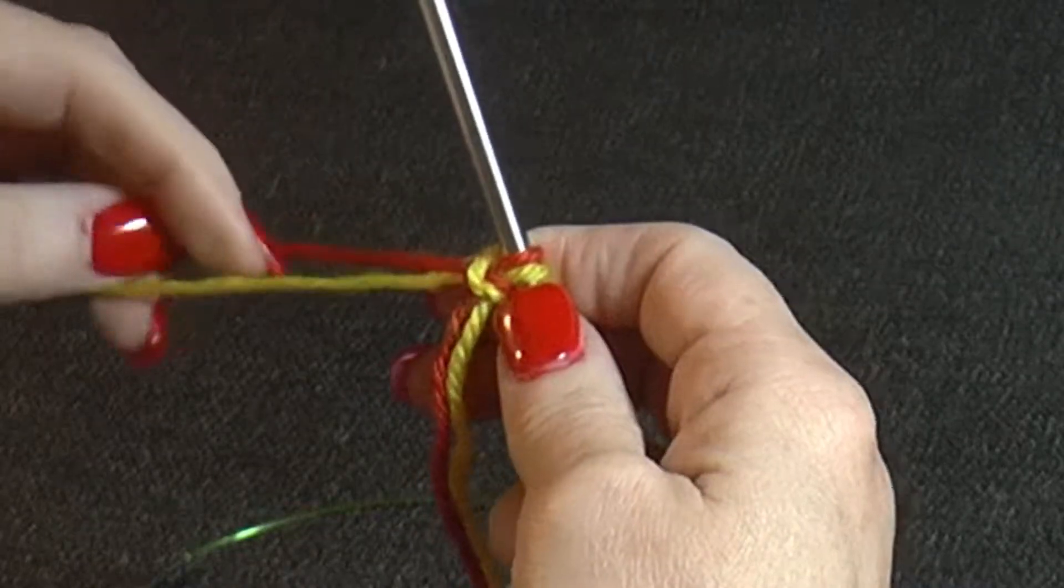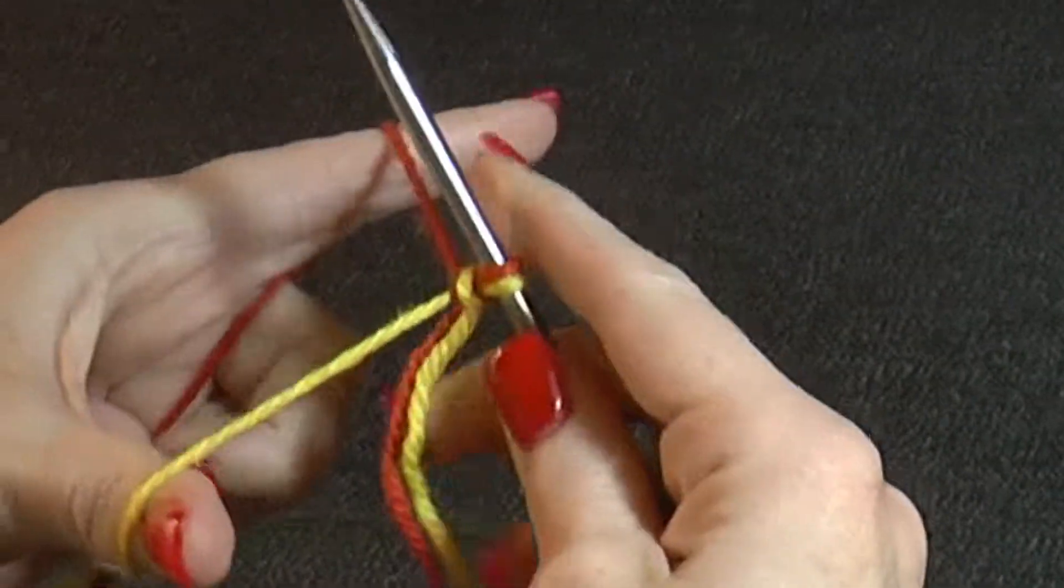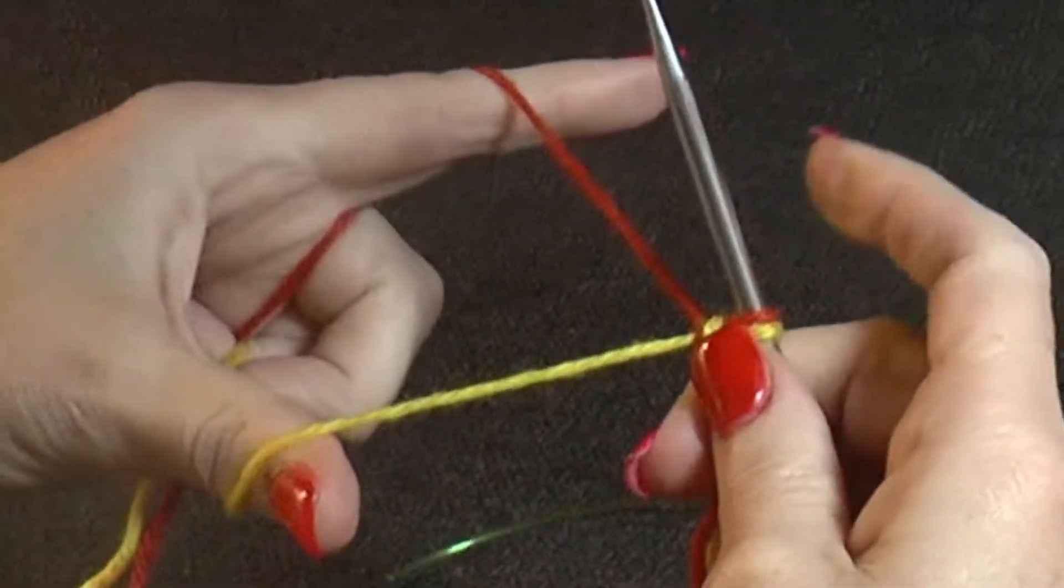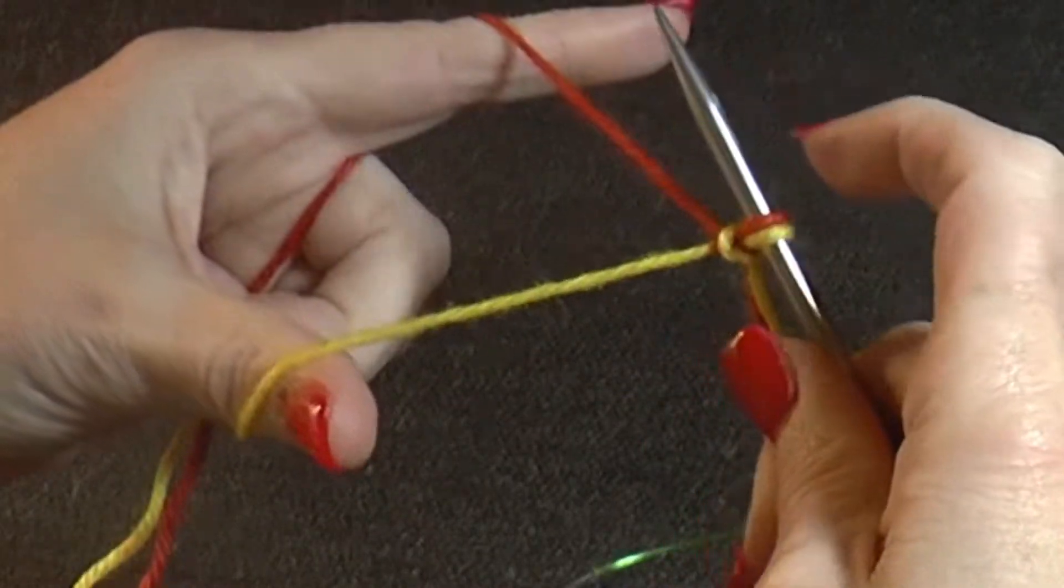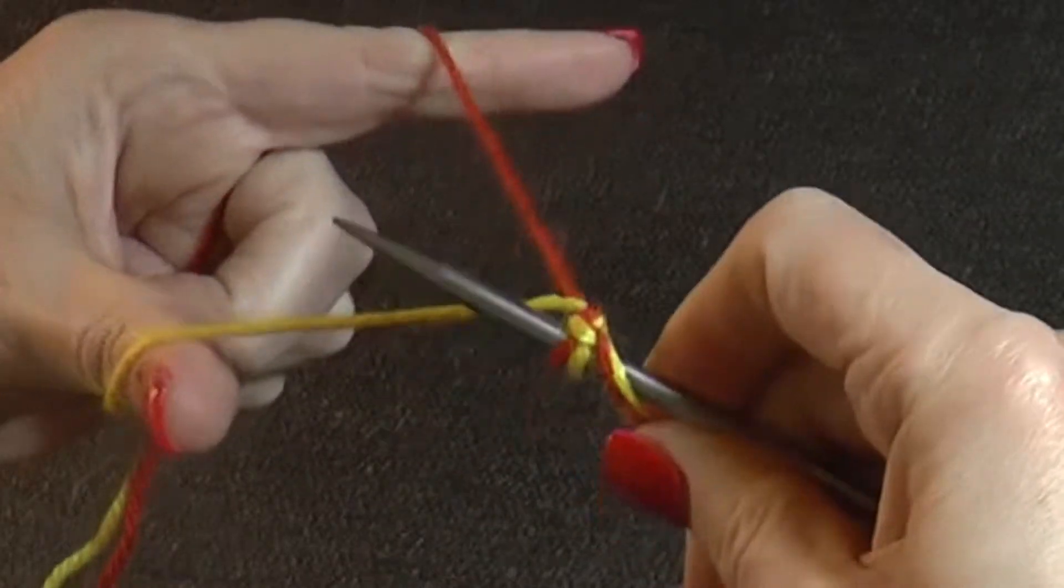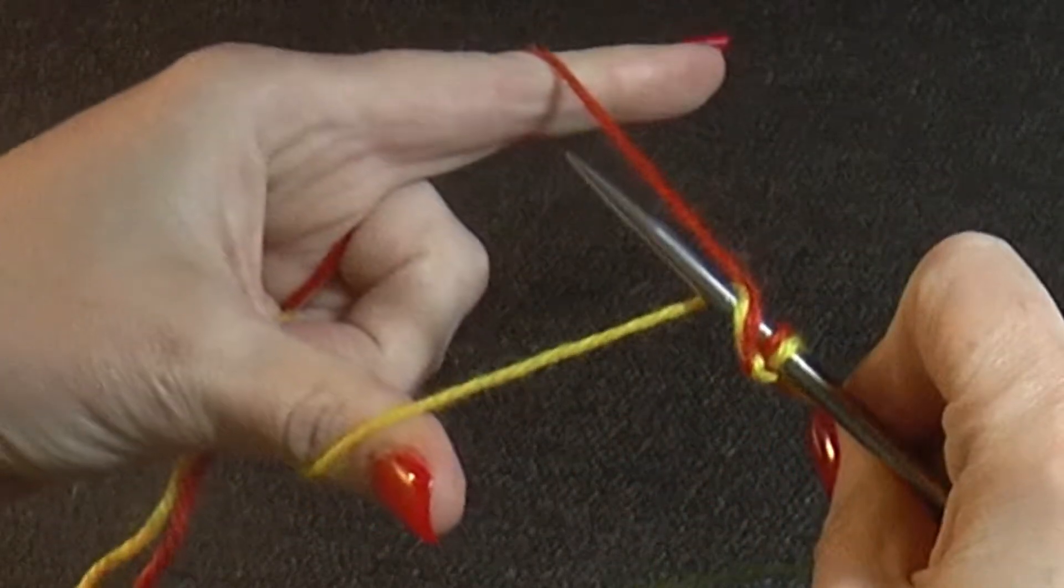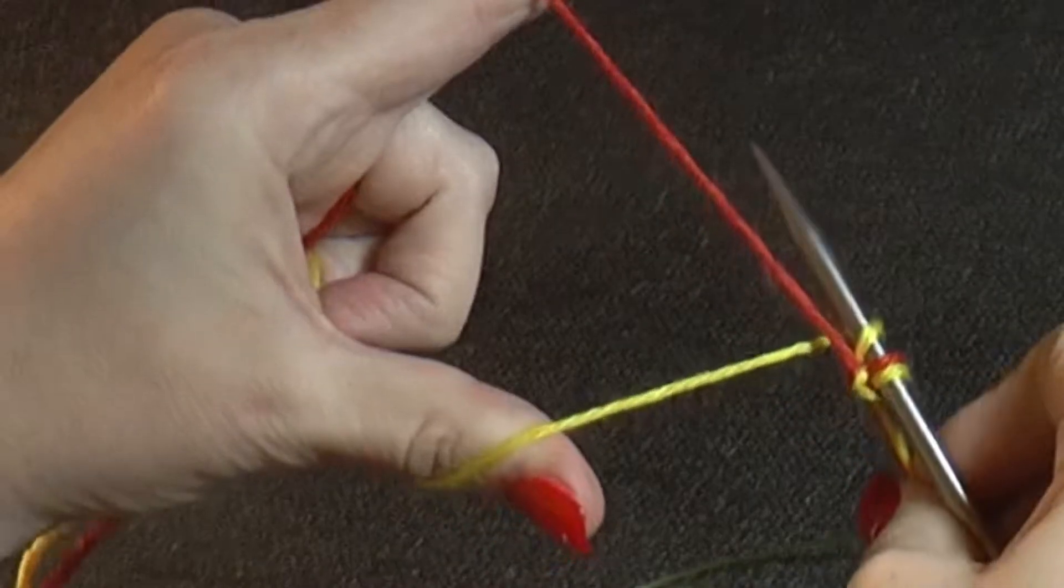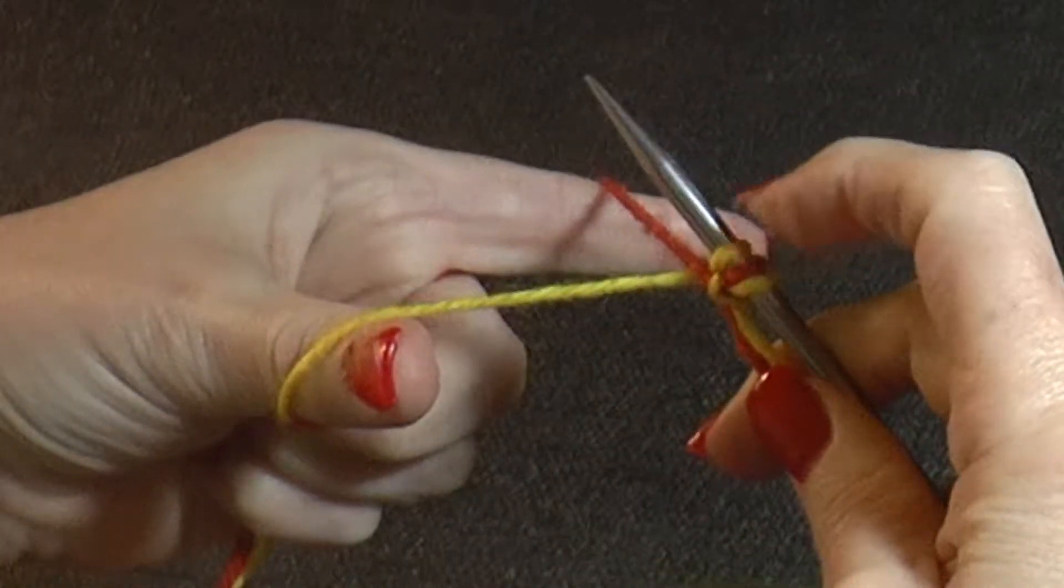Put your fingers in between the two colors. Take your needle and go around both strands of yarn and then in between. You've got your first stitch.